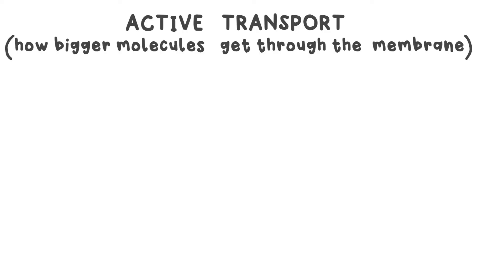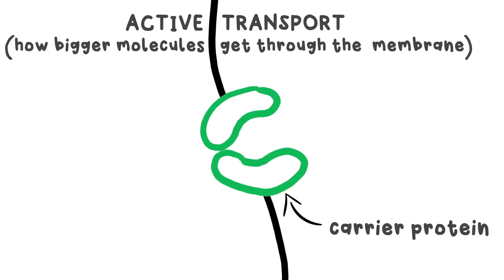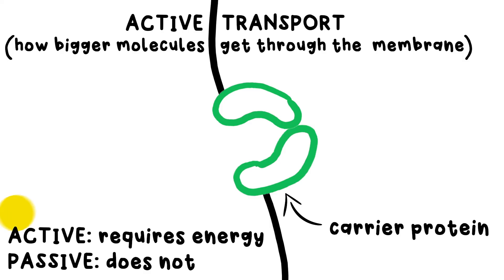So wait, if cell membranes are only semi-permeable, how do salts and sugars get in? Our cells do need them after all. Introducing active transport. The cell membrane has little chemical gates called carrier proteins that will grab hold of a molecule and push it into or out of a cell.